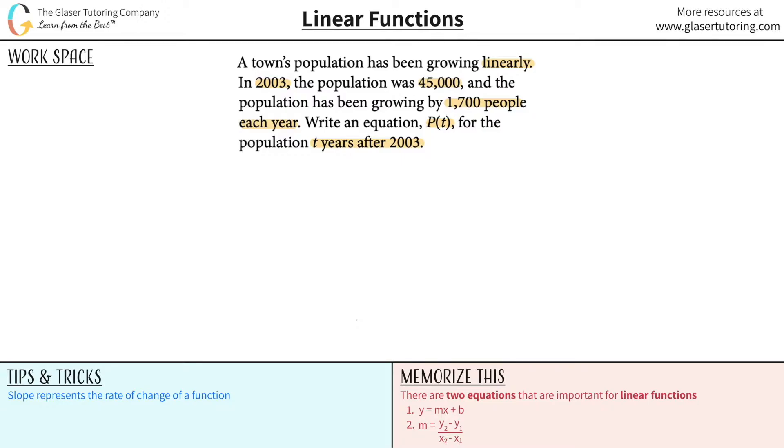If it changes linearly, we know that an equation could be created that looks something like y = mx + b. In this problem, the y is going to be P(t). I'll just call it P for population. So the population will equal some slope value m times some x value. What's the x? They're telling us the population t years, so the x could be represented as t plus b.